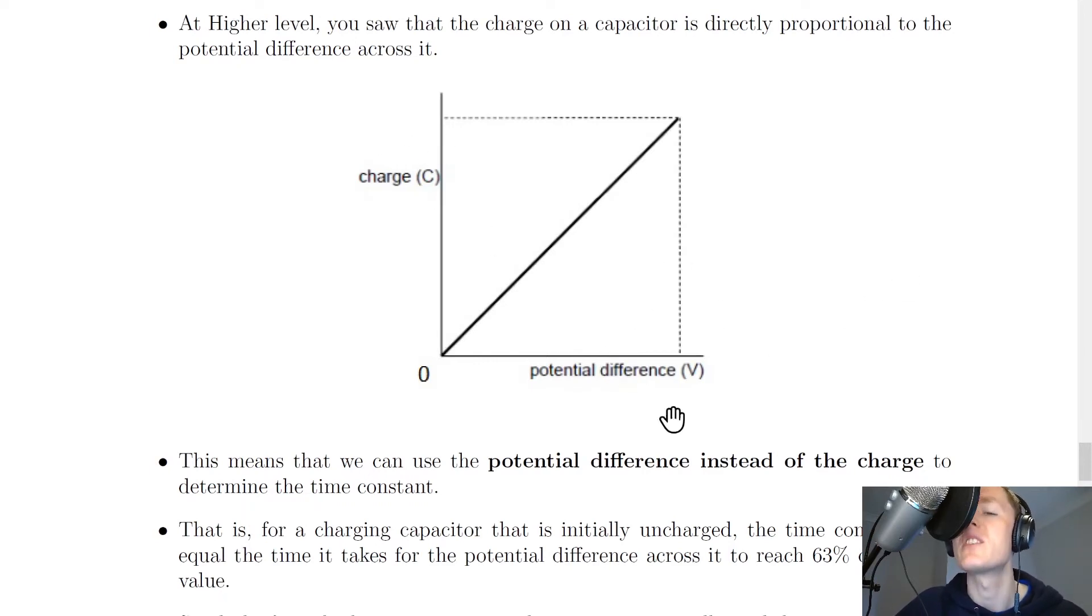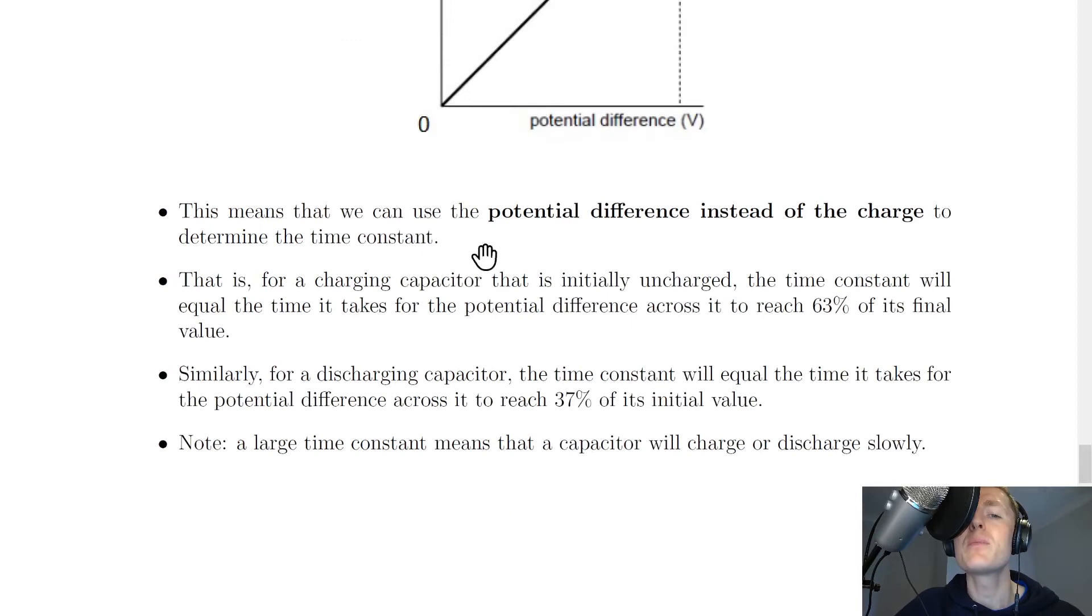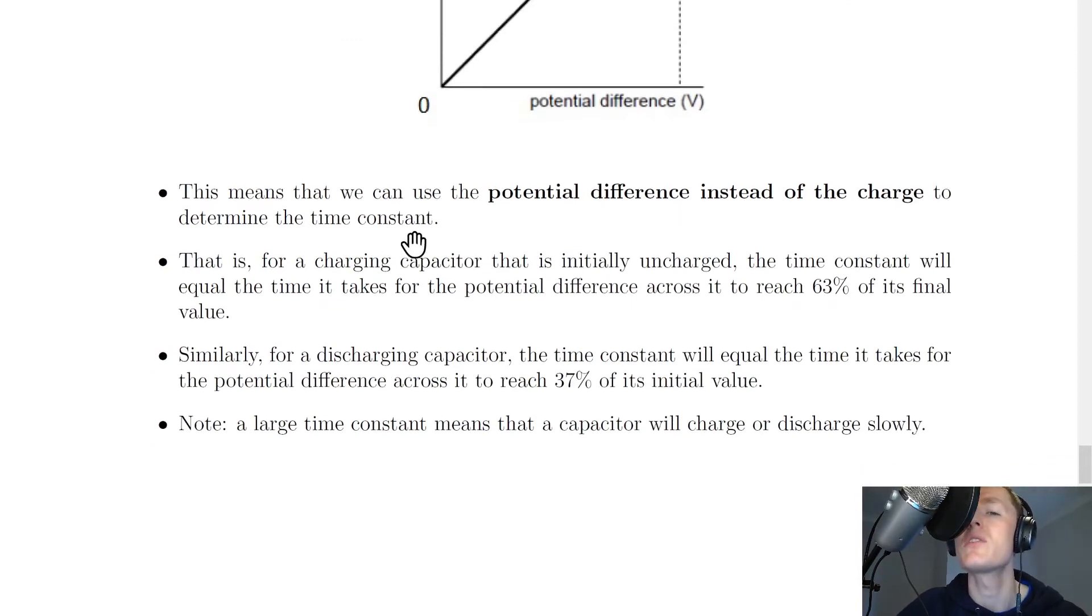So this just means as one increases, the other one increases as well. And this means that we can use the potential difference instead of the charge to determine the time constant. This is useful if you're given a graph of potential difference or voltage against time.